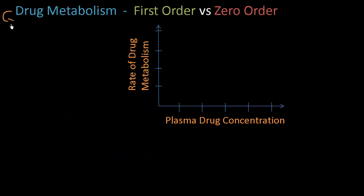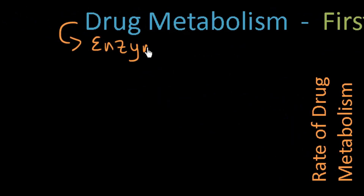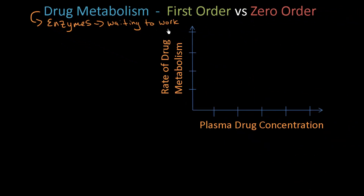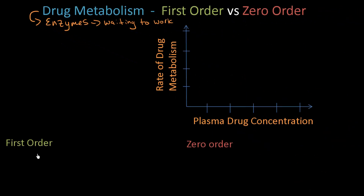With drug metabolism we are dealing with enzymes, and these enzymes are obviously located in the liver. We have more enzymes than we typically need at any given moment, so these enzymes are just sitting around waiting to work. Keep this idea in the back of your head because it will help explain the differences between first order and zero order kinetics.